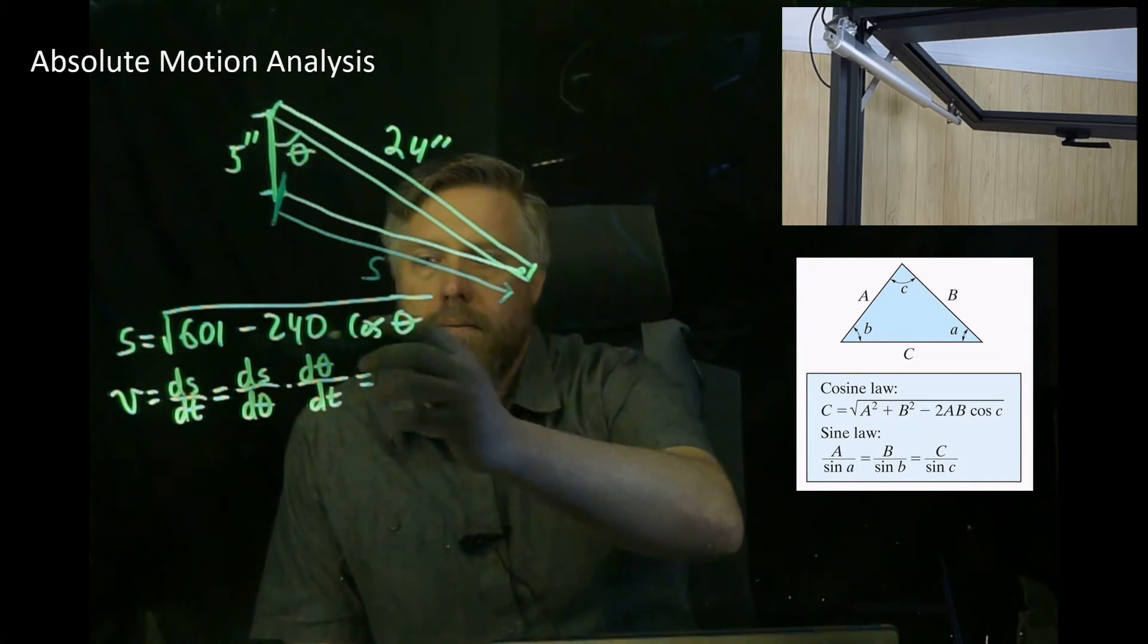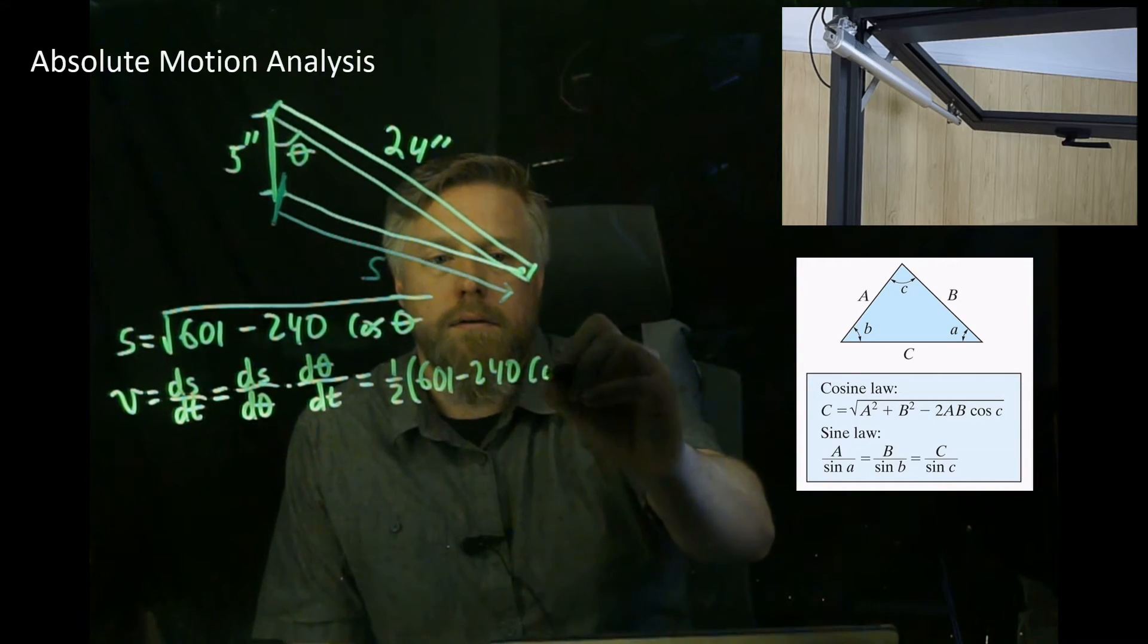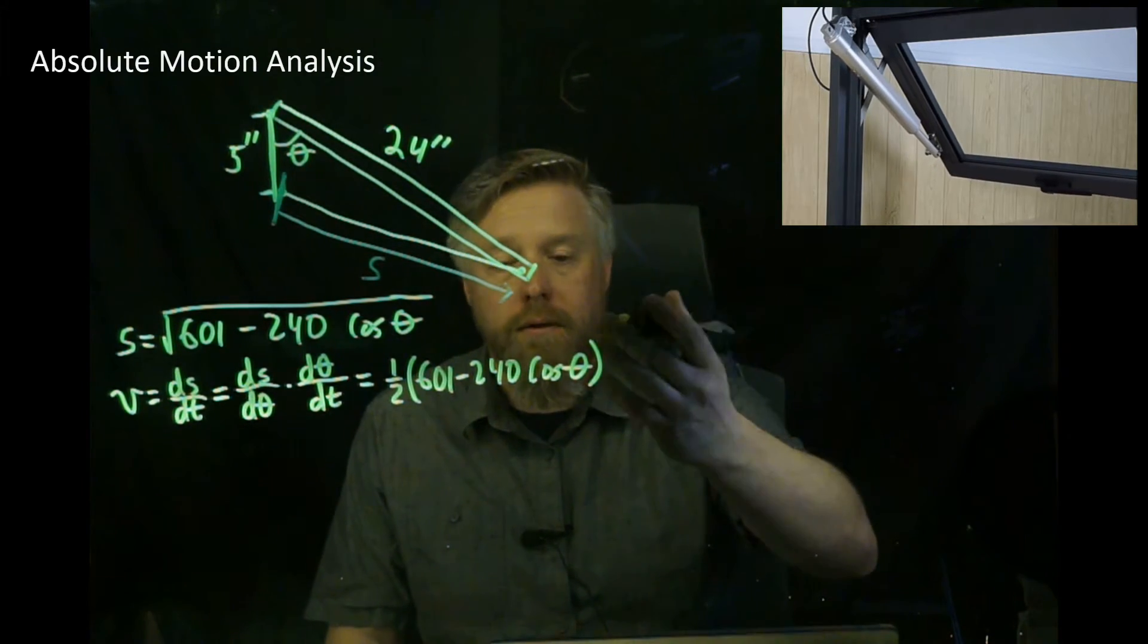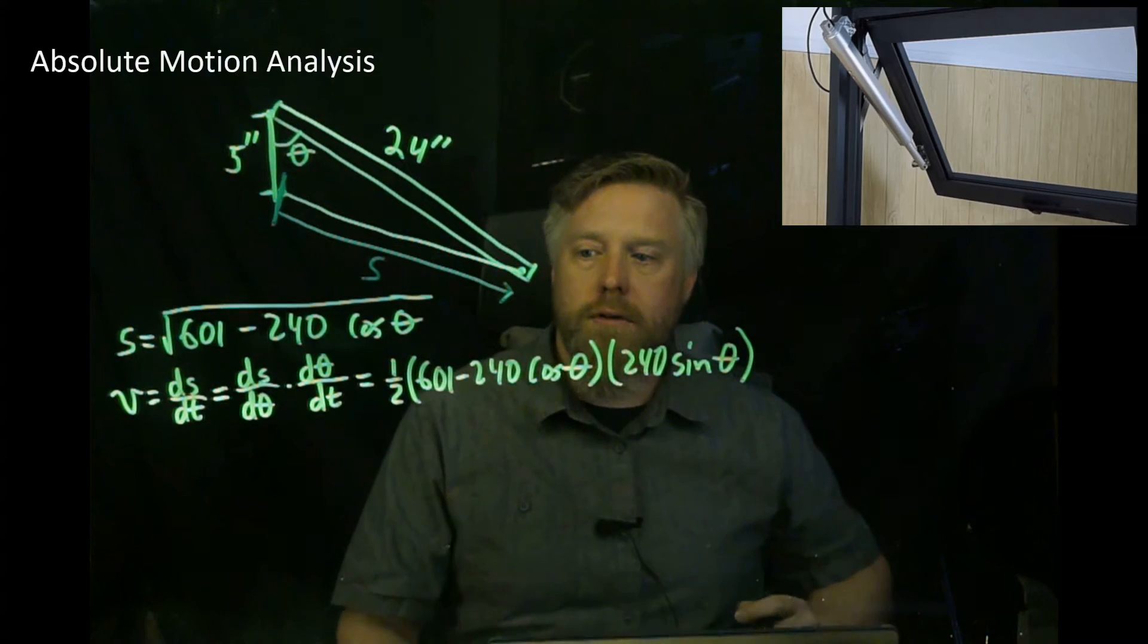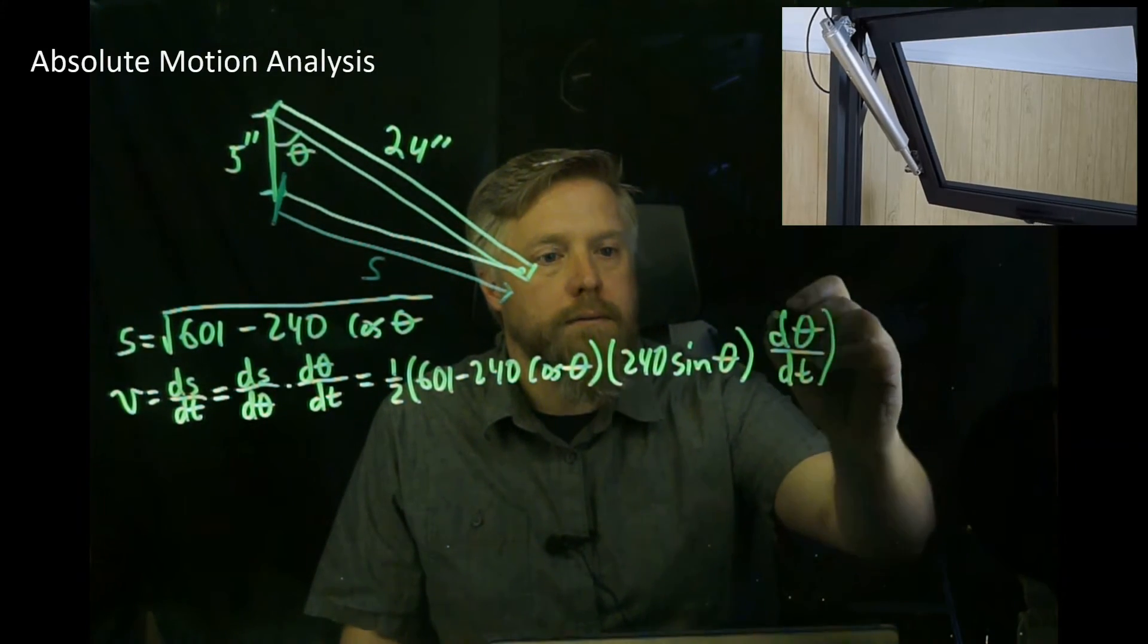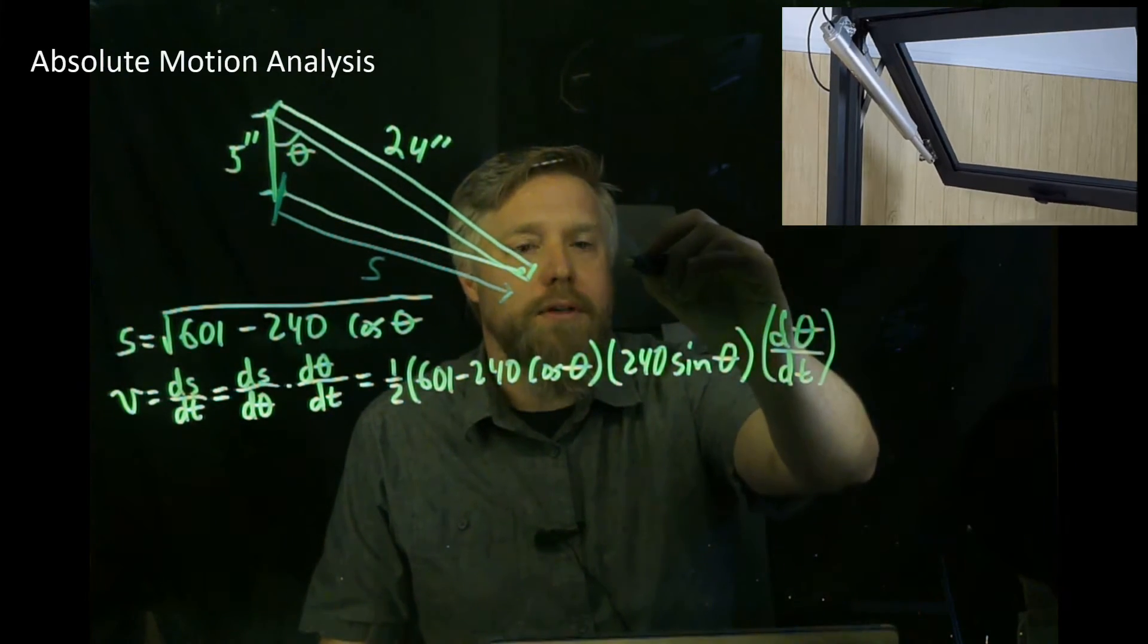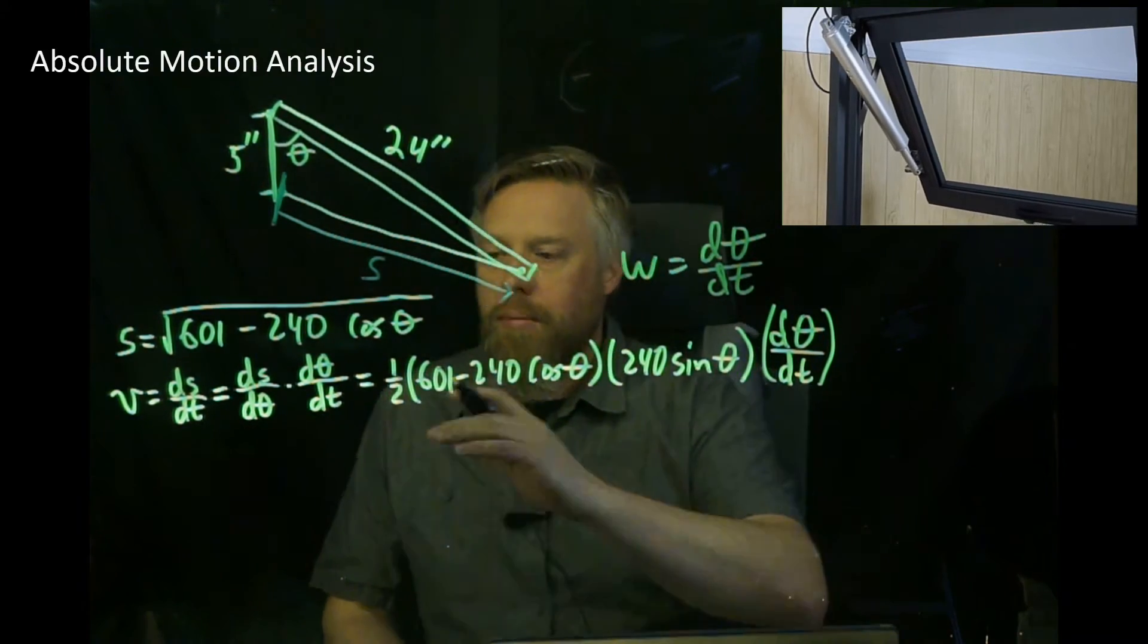Now ds/d theta we can take by taking the derivative of this. It's going to equal—bring the one-half power down—everything under the radical. Then we have to take the derivative inside of that. The derivative of 601 goes away. Derivative of cosine is negative sine, so we get 240 sine theta. Everything I've written so far is ds/d theta, and then of course I have to do d theta/dt to get the full equation. Now I have an equation with v in it and d theta/dt. What's d theta/dt? Well, we know one of our base kinematic equations for rotation is omega equals d theta/dt. So d theta/dt is omega. We can plug that in.